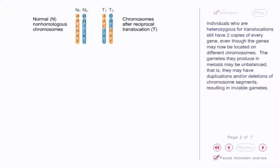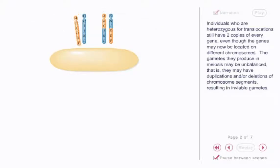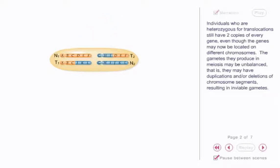Individuals who are heterozygous for translocations still have two copies of every gene, even though the genes may now be located on different chromosomes. The gametes they produce in meiosis may be unbalanced, that is, they may have duplications and/or deletions of chromosome segments, resulting in inviable gametes.